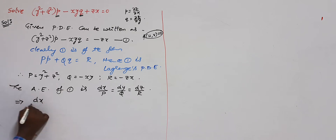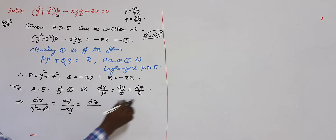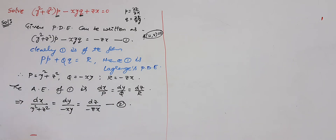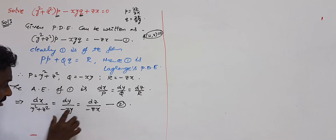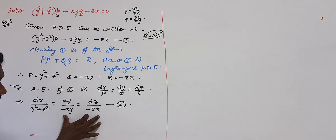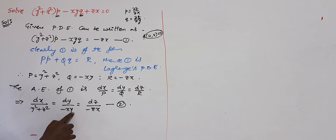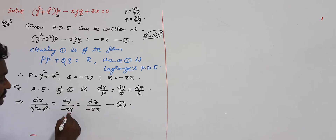Replacing the values: dx/(y² + z²) = dy/(−xy) = dz/(−zx). Take this as equation number 2. We observe that in the last two ratios, the denominators are products — so we check whether they can be solved by direct integration. The −x terms cancel, leaving only y and z in the denominators, so the last two ratios are solved by direct integration.